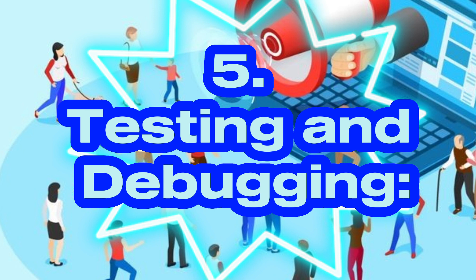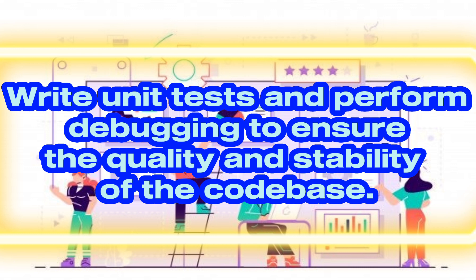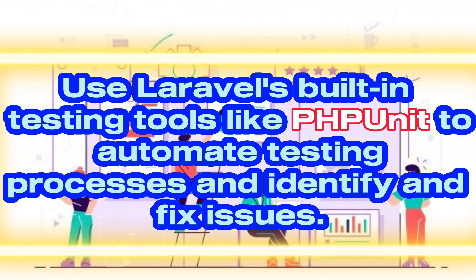Five: Testing and debugging. Write unit tests and perform debugging to ensure the quality and stability of the code base. Use Laravel's built-in testing tools like PHPUnit to automate testing processes and identify and fix issues.